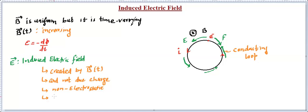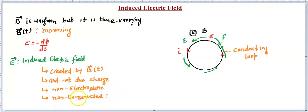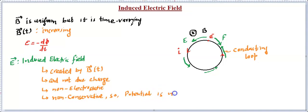Moreover, the induced electric field is non-conservative in nature. This means the work done by this field in a closed loop is non-zero. Secondly, since it is non-conservative, it cannot store energy, so potential energy cannot be defined, and hence potential corresponding to this field is not defined. If somebody asks for the potential due to the induced electric field, the answer is: it is not defined at all.